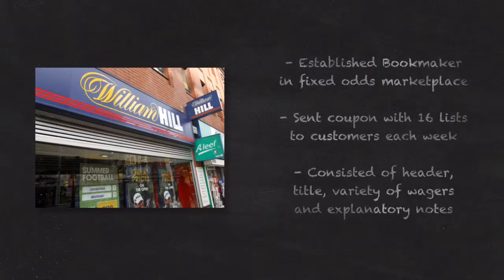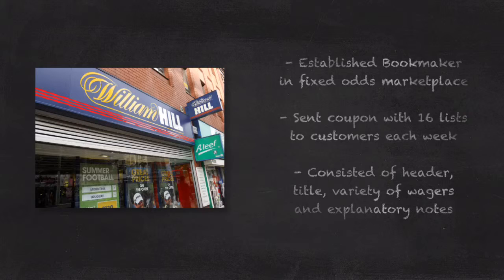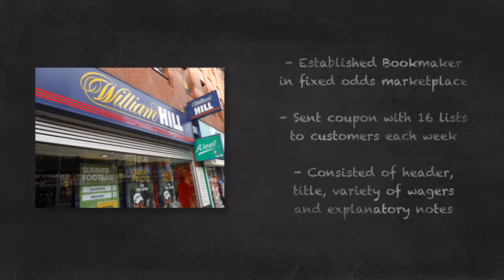First off, let's look at the facts of the case. William Hill was a well-established UK bookmaker who since the 1950s offered fixed odds on football matches. They would send out a coupon to their clients each week, which contained 16 lists related to the matches to be played that weekend. These lists contained a header with a title, a variety of wagers at stated odds, and explanatory notes.